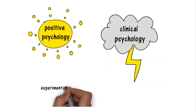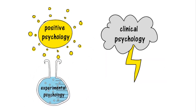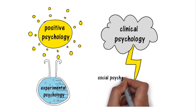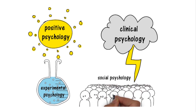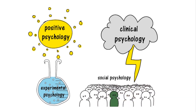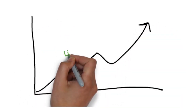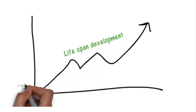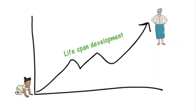Experimental psychology uses a scientific process to learn more about the mind and behavior. Social psychology studies how a person's thoughts, emotions and behaviors are influenced by other people. Lifespan development encompasses the area of psychology that addresses developmental changes one experiences throughout life, from conception to death.